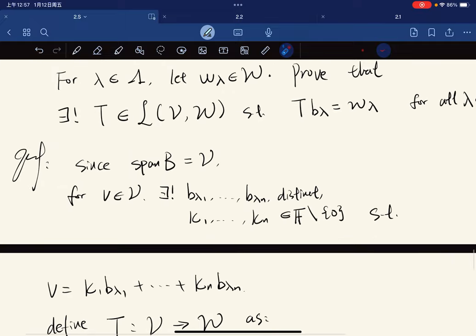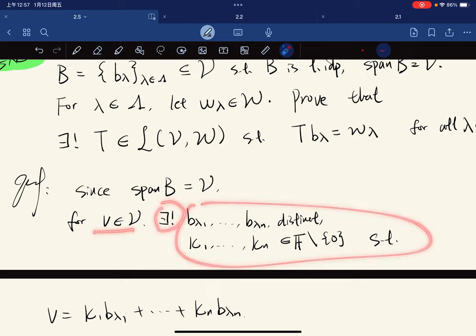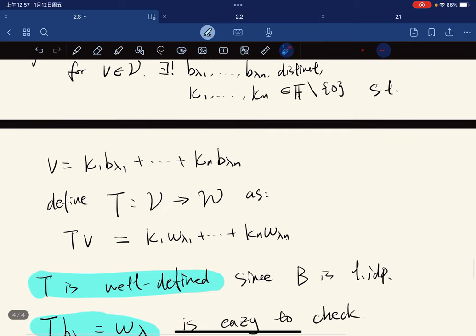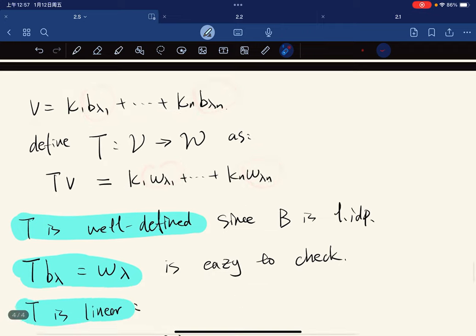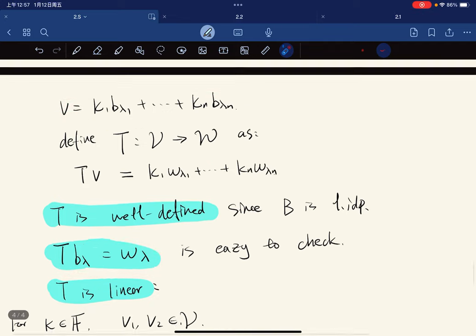Since it spans V, for each V there is a unique distinct element such that this expression. So we can define, we might guess, we define the linear map as Tv. You have this and it maps to this. We show that T is well defined. T is well defined because B is linearly independent. This expression is unique.